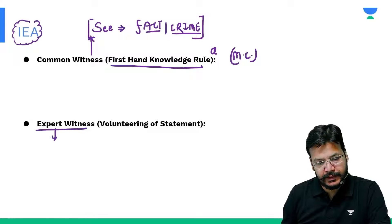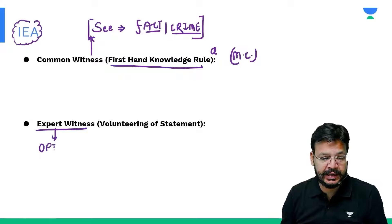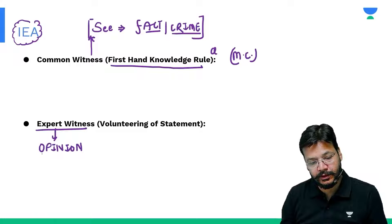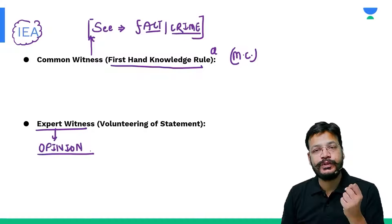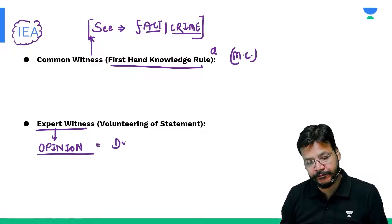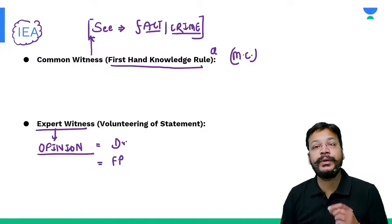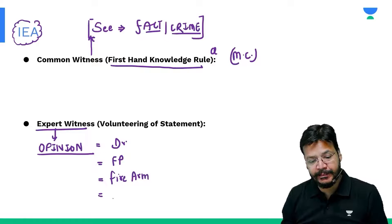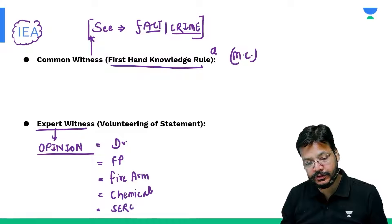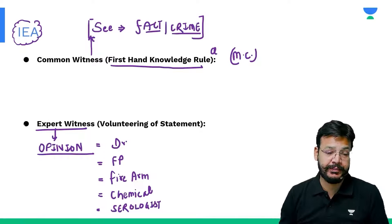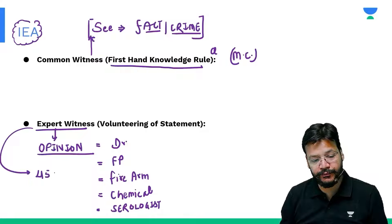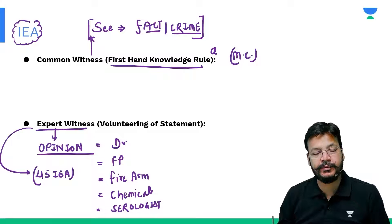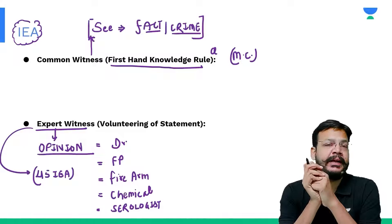Expert witness is a qualified person who is making an opinion. Examples of expert witnesses include: a doctor, a fingerprint expert, a firearm expert, a chemical examiner, and a serologist. These all are expert witnesses. Remember, expert witnesses are defined under Section 45 of the Indian Evidence Act.